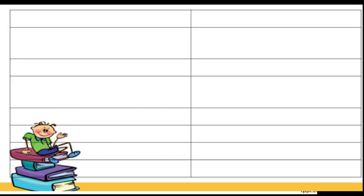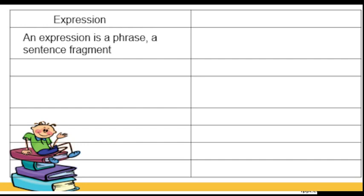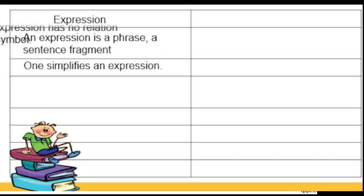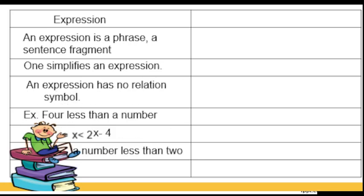So we have using the table. So we have the expression on the left side, and an expression is a phrase, a sentence fragment. One simplifies expression. An expression has no relation symbol. So we have the example, as I've said a while ago, and just make it as into a simple one for you to be able to differentiate it.